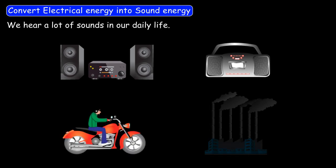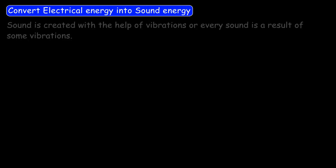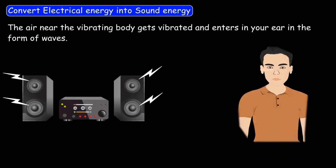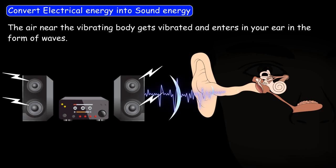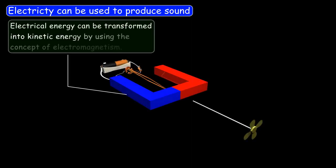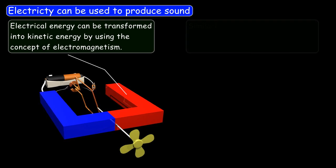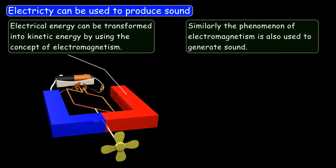Now let's learn the concept of conversion of electrical energy into sound energy. We hear a lot of sounds in our daily life, such as the sound of a music player, sound of a radio, sound produced by vehicles, and some industries also produce sound. Sound is created with the help of vibrations — every sound is the result of some vibrations. The air near the vibrating body gets vibrated and enters your ear in the form of waves, which enables you to hear the sound. Electricity can be transformed into kinetic energy by the concept of electromagnetism, and similarly, electromagnetism can be used to generate sound.